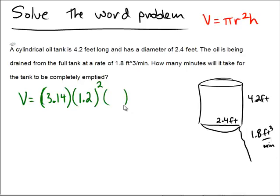And that's going to be multiplied by the height, and the height, the length in this case, is 4.2. So that's going to be the volume. That's going to tell me how much total cubic feet I have. So in order to figure out how long it takes, since I know my rate, I'm just going to take that volume and divide by the rate, because that's going to tell me how long it's going to take for all that amount of stuff to come out of the tank.